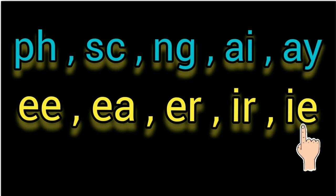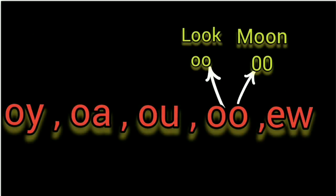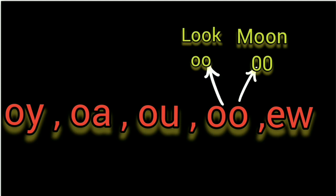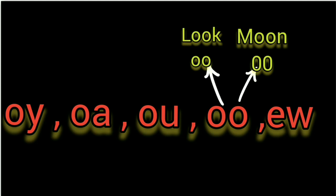IE — this pattern says the I sound as in tie. OY — OY as in boy. OE — OE as in oak. OU — OU as in out. OO — OO has two sounds: first sound is OO as in look, second sound is OO as in moon. EW — EW as in new.